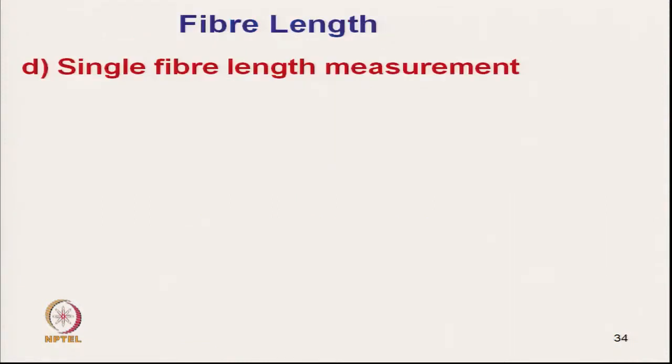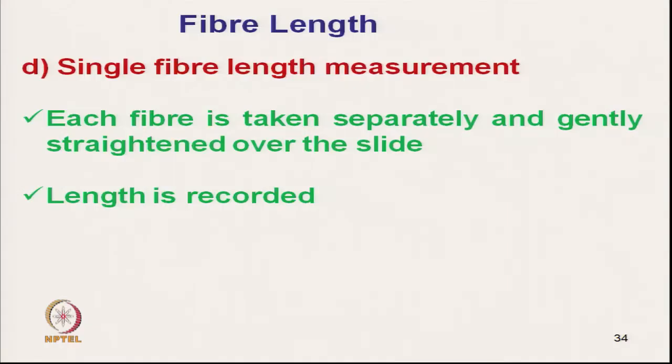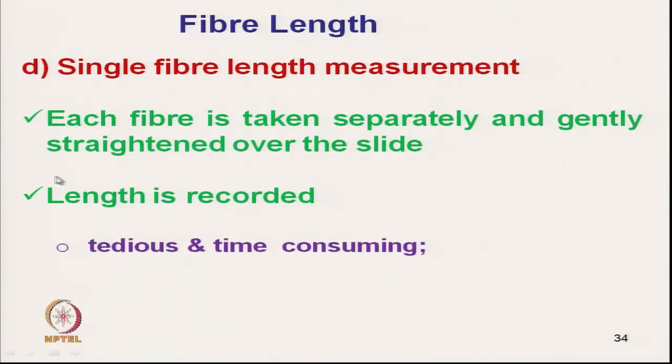Next is single fibre length measurement. This is normally not done in industry because it is time-consuming. Each fibre is taken separately, gently straightened over a slide with all crimps, bends, and loops removed, and the length is recorded. It is tedious and not used in mill practice, but can be used for specific research or defect analysis.